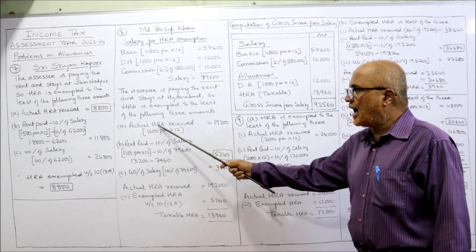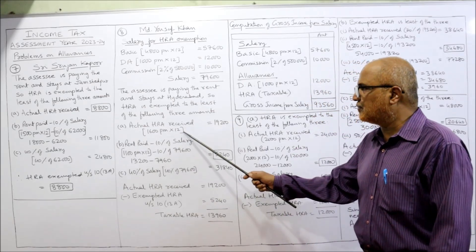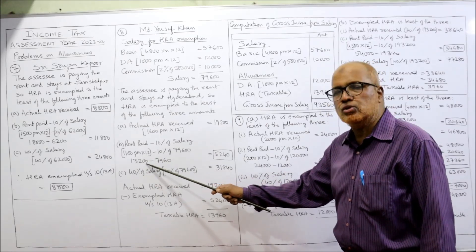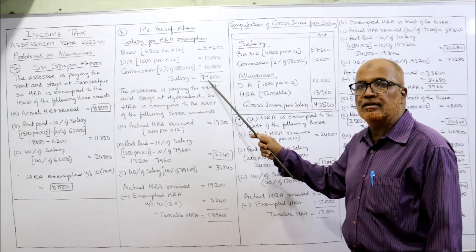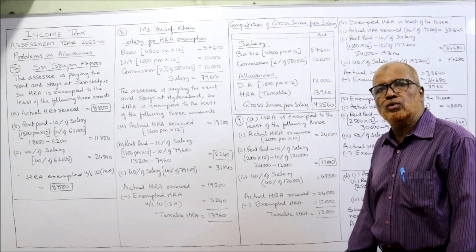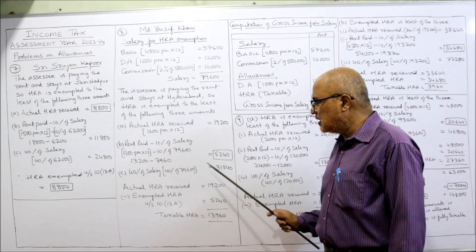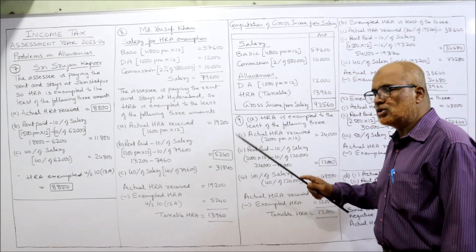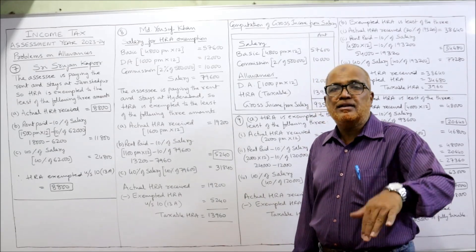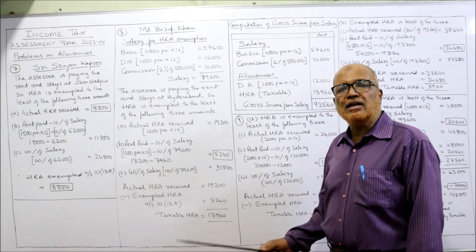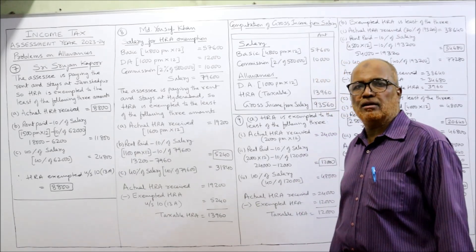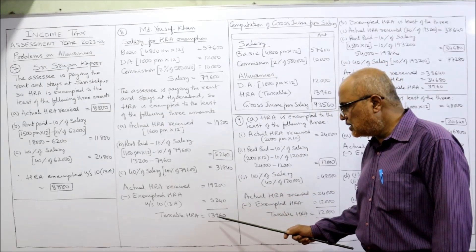HRA exempted to the least of three: (1) Actual HRA received: ₹1,600 × 12 = ₹19,200. (2) Rent paid minus 10% of salary: ₹1,100 × 12 = ₹13,200 minus 10% of ₹79,600 = ₹7,960; so ₹13,200 − ₹7,960 = ₹5,240. (3) 40% of salary: 40% of ₹79,600 = ₹31,840. Least is ₹5,240 — exempted HRA is ₹5,240. Taxable HRA = actual HRA ₹19,200 − exempted ₹5,240 = ₹13,960.